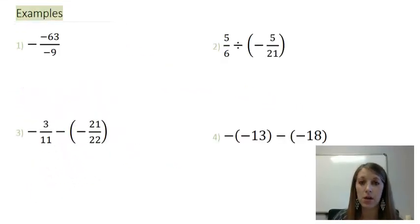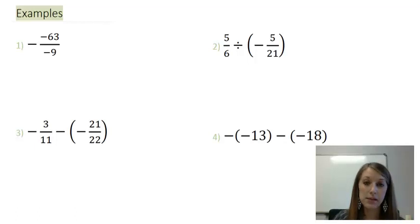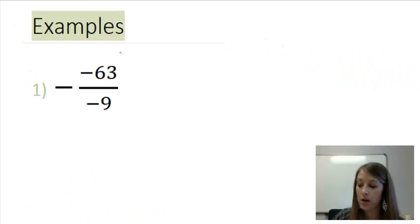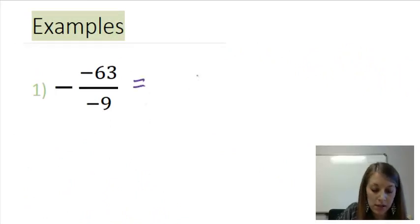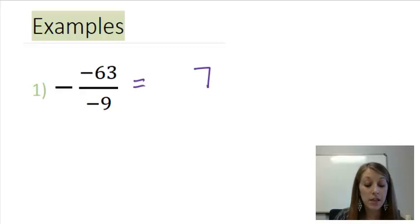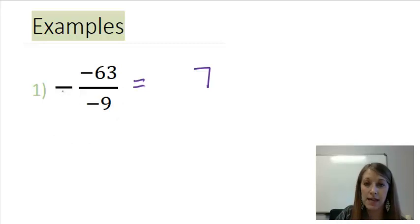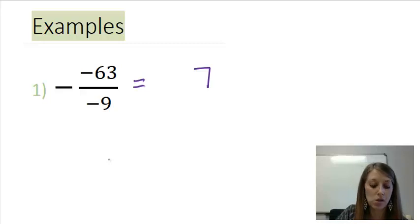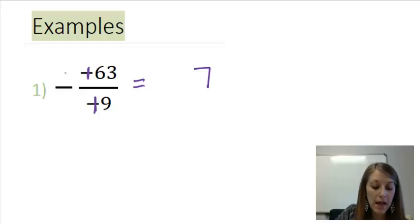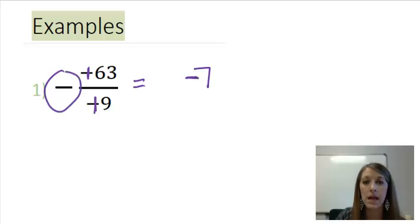Here are some examples that put all of this together — pause the video and see if you can work them on your own. Example 1 is a pure division problem. 63 divided by 9 comes out evenly and gives 7 — that's not the difficult part. The difficult part is whether the answer is positive or negative. With fractions, it doesn't matter whether the negative is in front, in the numerator, or with the denominator — double negatives cancel out. I cancel any two of the negatives, and with one negative left over, my answer is negative 7.